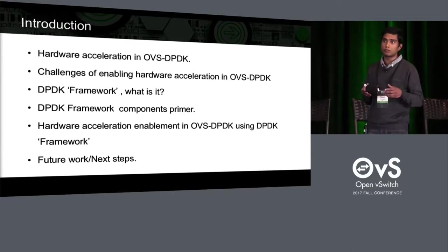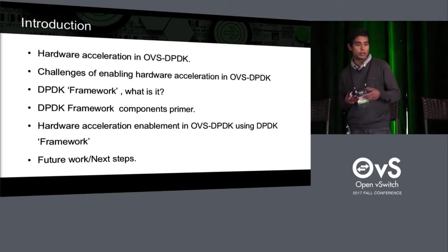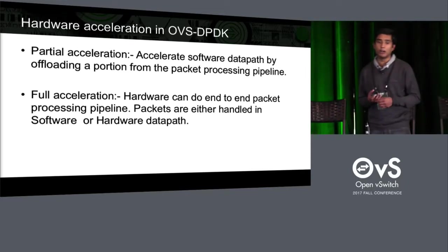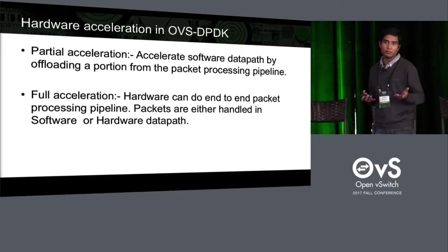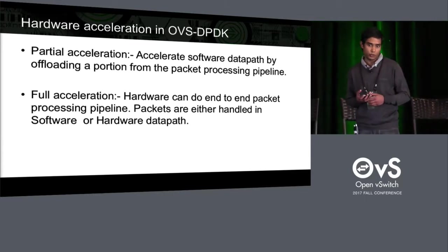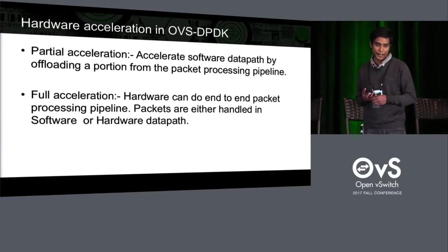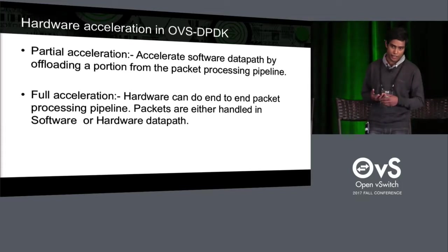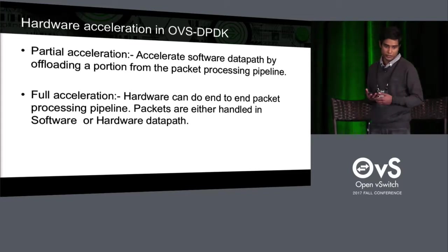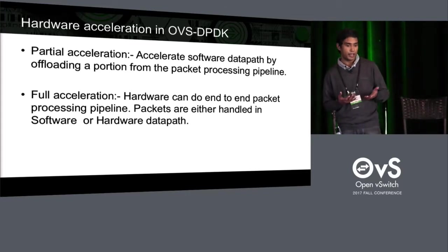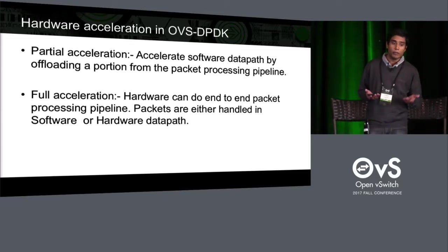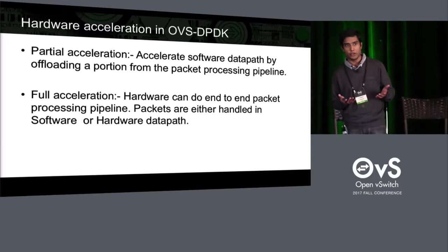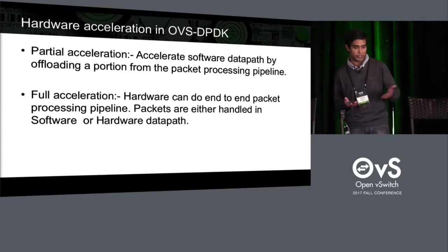We'll talk about what we have done so far and the next steps. Hardware acceleration is an approach to achieve better performance in a vSwitch or OVS-DPDK by offloading some packet processing into hardware. It can be either a partial offload or a full acceleration. Partial offload means offloading a portion of the packet processing pipeline into hardware, whereas full acceleration runs the end-to-end pipeline in hardware.